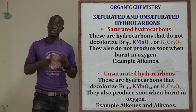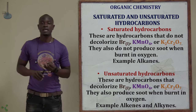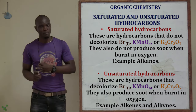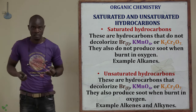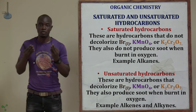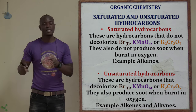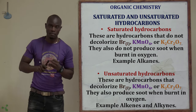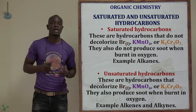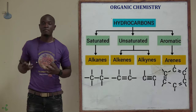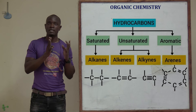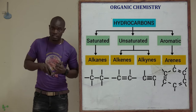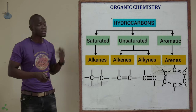For the unsaturated hydrocarbons, they can discolorize bromine water, they are able to discolorize potassium permanganate, and they are able to discolorize potassium dichromate. When they are burnt in the atmosphere, they produce soot — alkenes produce less soot, but alkynes produce the most amount of soot. In short, the unsaturated hydrocarbons can discolorize bromine water, potassium permanganate, and potassium dichromate, and when burnt they produce a lot of soot. The families belonging to unsaturated hydrocarbons are the alkenes and the alkynes.